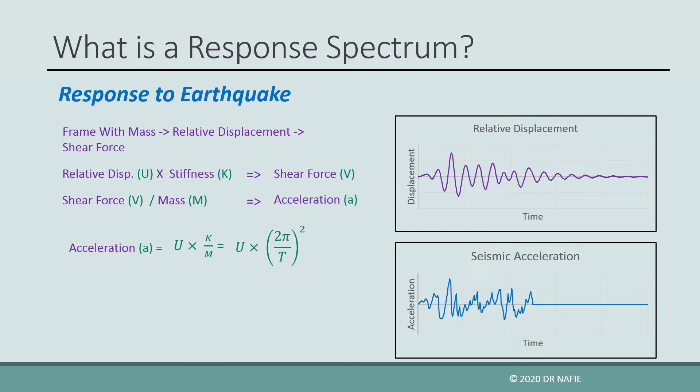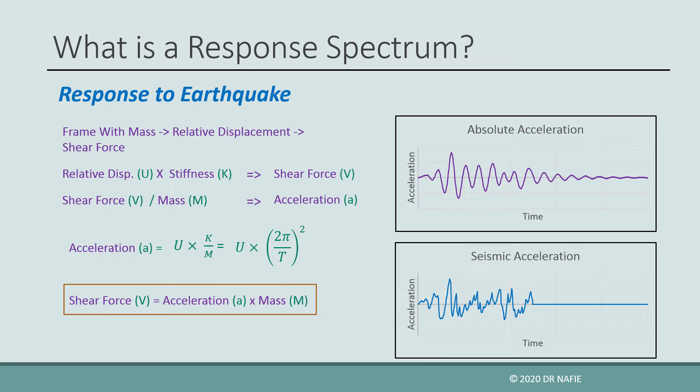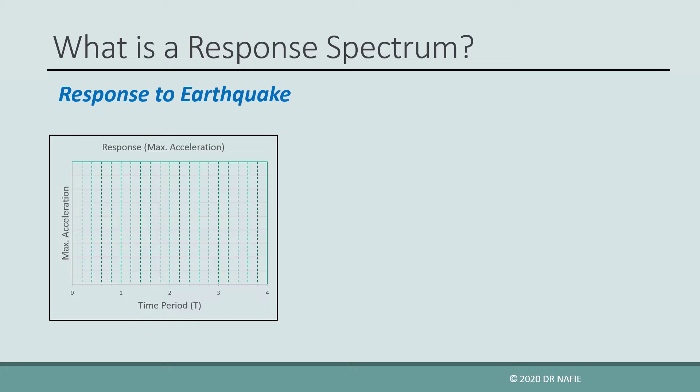We prefer to use the acceleration instead of the relative displacement because we can directly obtain the design force by multiplying the acceleration with the mass of the building. In structural design, we are mainly interested in the maximum value of the force that occurs in the building. We are not concerned about the direction of the force or when it happens. For a single degree of freedom system, the maximum response is mainly dependent on the natural time period of the structure.